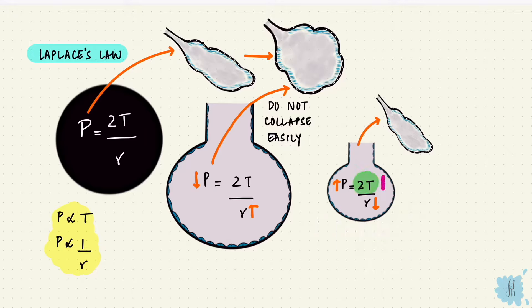The surface tension. By lowering the surface tension, we can lower the pressure, and the substance that does that is surfactant.